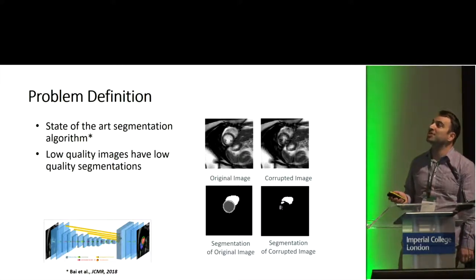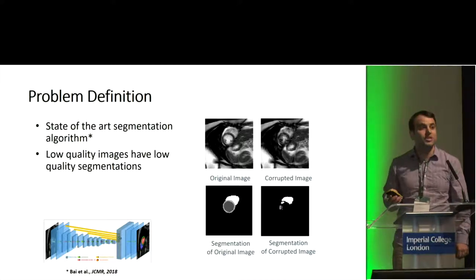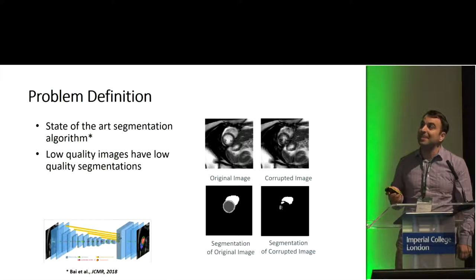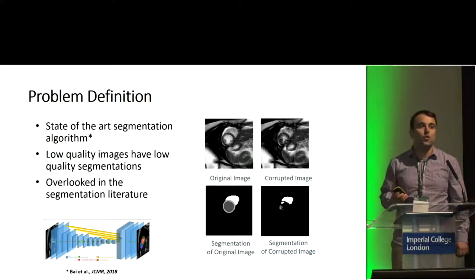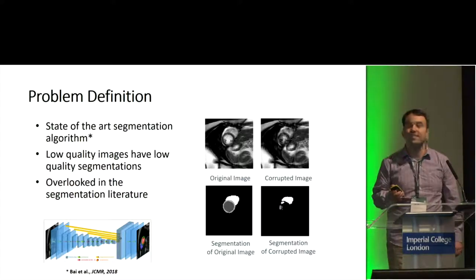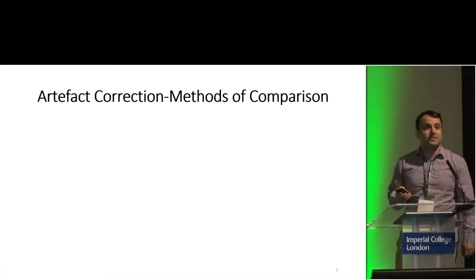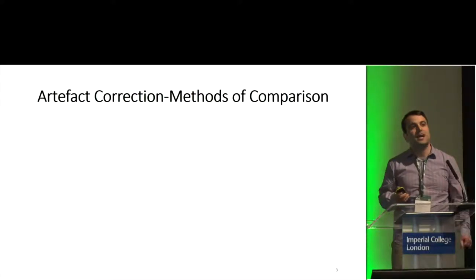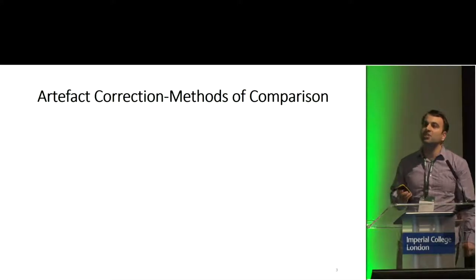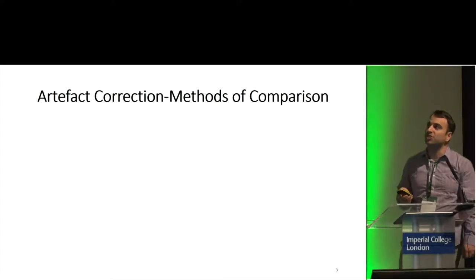But when the original image is low quality due to image artifacts during acquisition, the segmentation quality of the same network reduces dramatically. This issue happens during the acquisition of the k-space in cardiac MRI, and is often overlooked in the segmentation literature where we have controlled data, yet is quite common in real clinical scenarios.